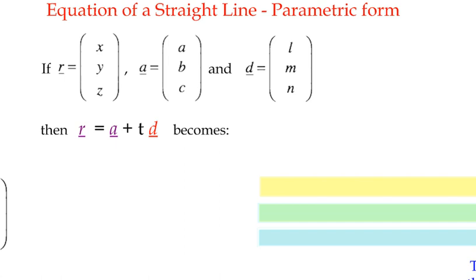This is example 9 in our vector topic. We had a look in example 8 at the start of the equation of a straight line in three dimensions. If you haven't watched example 8, go back and do it now, because this might not make much sense.